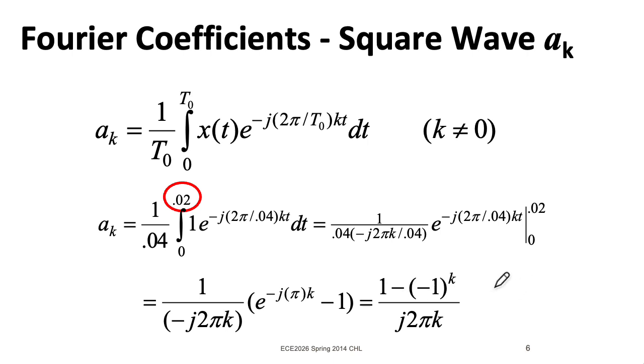So for even k, I'll get 1 minus 1, which is 0. For odd k, I'll get 1 minus minus 1, which is 2. So for odd k, that 2 in the numerator is going to cancel with the 2 in the denominator. But for even k, well, it zeros out. But remember, everything I just talked about is for k not equal to 0.